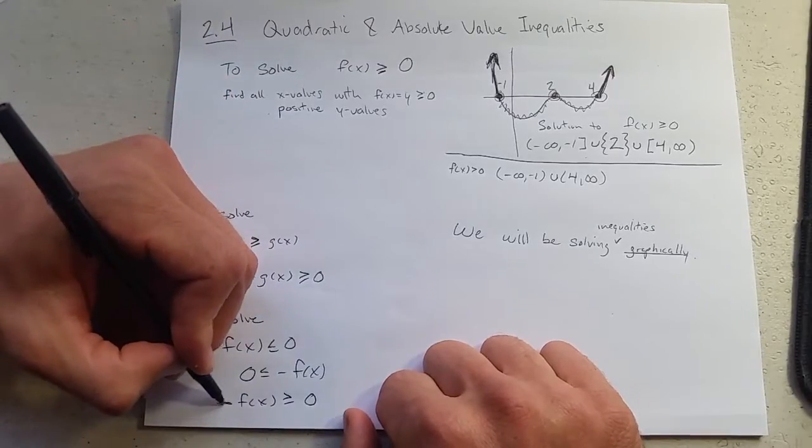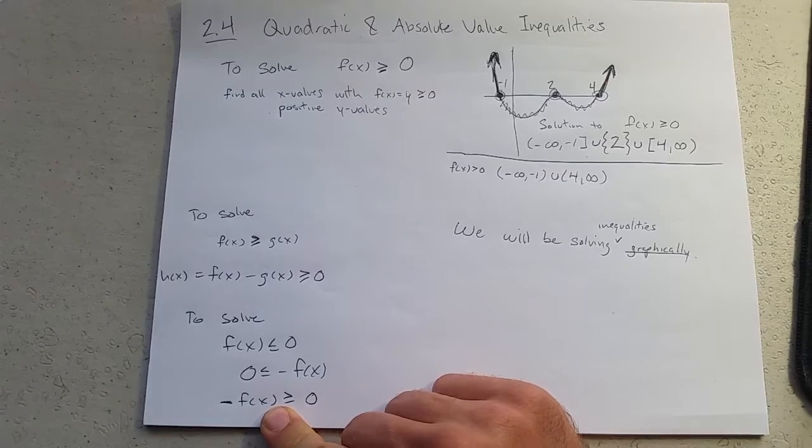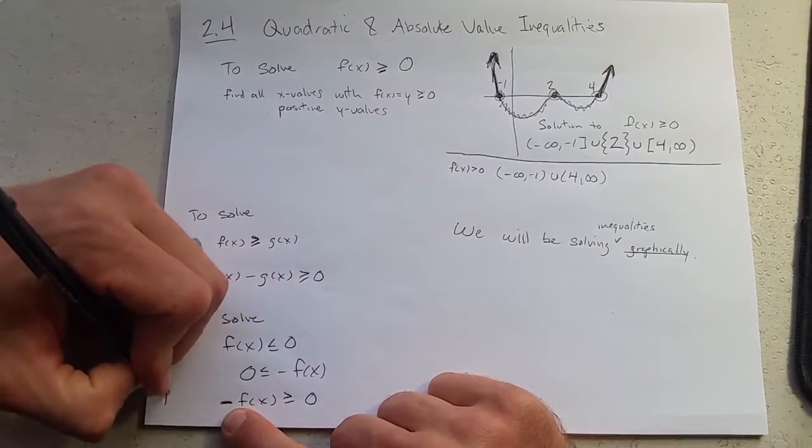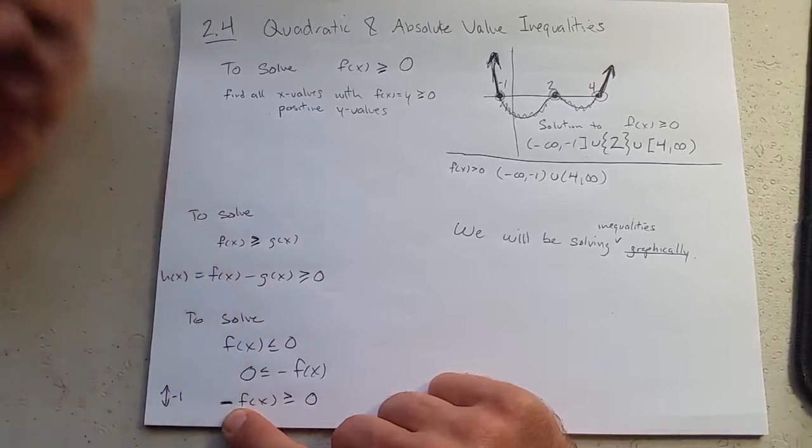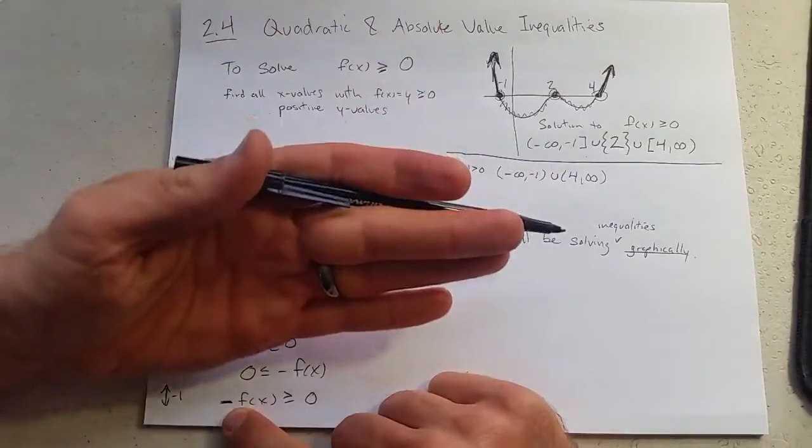So this would be the graph of negative f of x. When is that greater than or equal to 0? Remember, what a negative does, negative is a vertical reflection. Well, it's a stretch, technically, but it's a stretch of negative 1. And so it would be a vertical reflection. It would take the graph, flip it over.